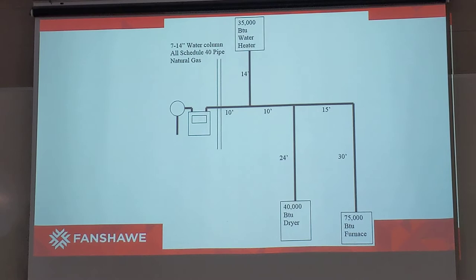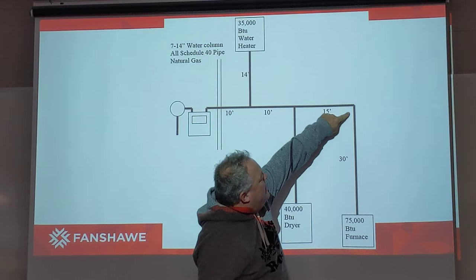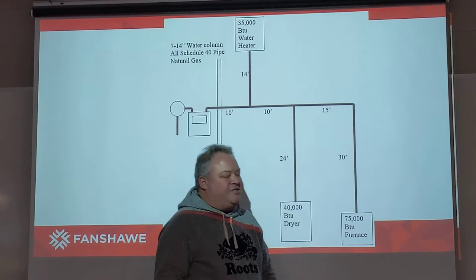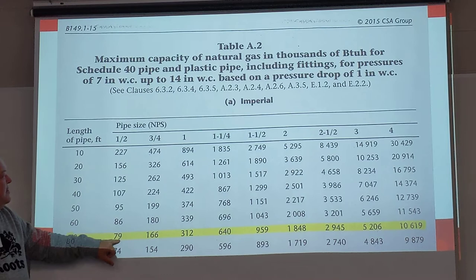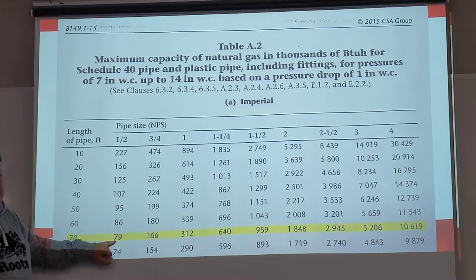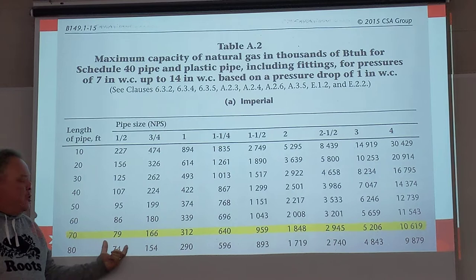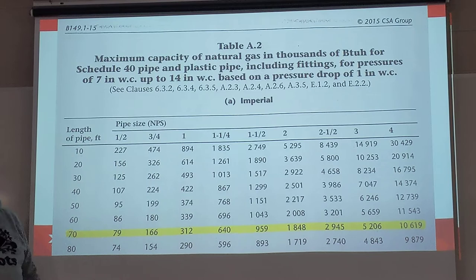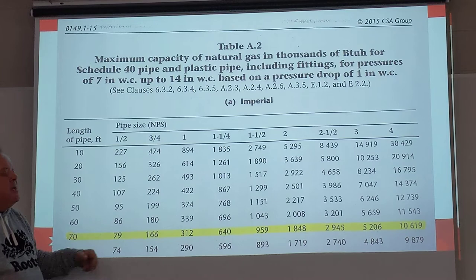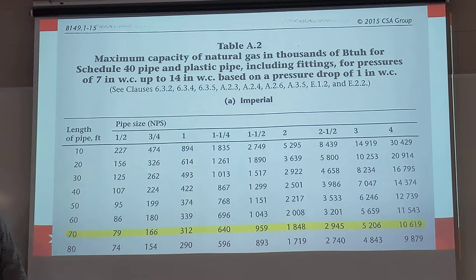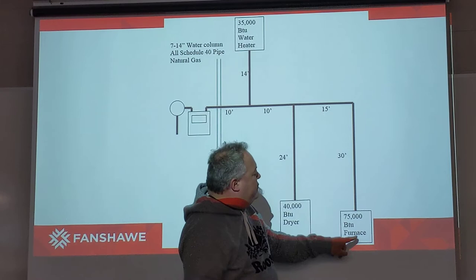We're looking at a 75,000 BTU appliance. This 30-footer and this 15-footer both serve the 75,000 BTU furnace. How big does that pipe need to be? At the 70-foot application, because we only have 75,000 BTUs, we're able to utilize a half-inch pipe with a capacity of 79,000 BTUs. Note that these tables do not show the three zeros — it's assumed we know there are three zeros behind each capacity value. If the furnace had an input of 85,000 BTUs, we'd have to step up to three-quarter inch. Because we only have 75,000, we can use a half-inch line. So both the 15-footer and the 30-footer coming down to the furnace are going to be half-inch.